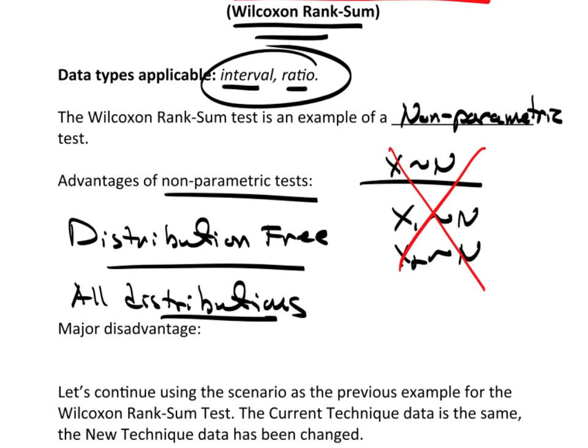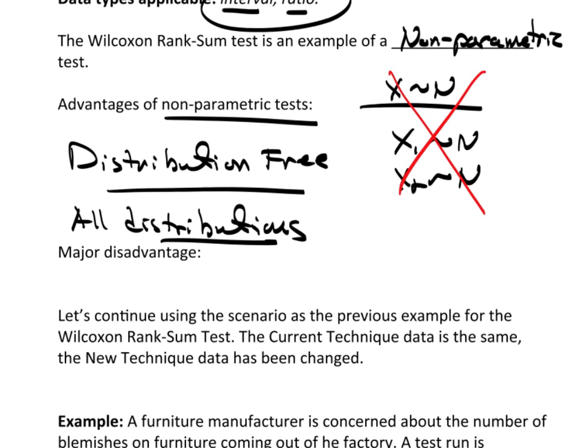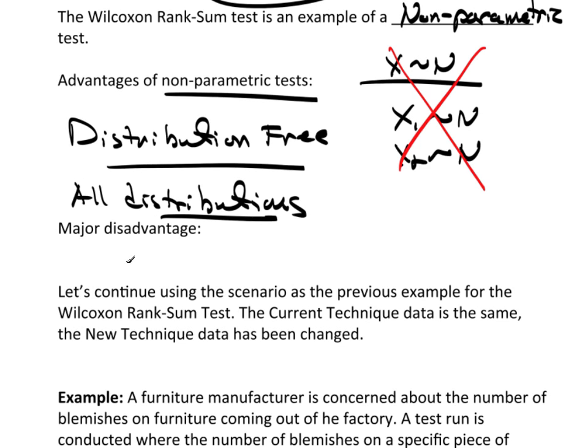But we're still limiting it to interval and ratio data. Now, a major disadvantage, and some would argue whether this is really major or not, but I think one of the major disadvantages is that these non-parametric tests are typically very conservative. And that makes sense. If you have a technique that works on all distributions, it can't be as exact as something that works for a specific distribution. Think of it as the empirical rule in comparison to Chebyshev's. Chebyshev's works everywhere, but it's extremely conservative as compared to the empirical rule. It's the exact same idea.